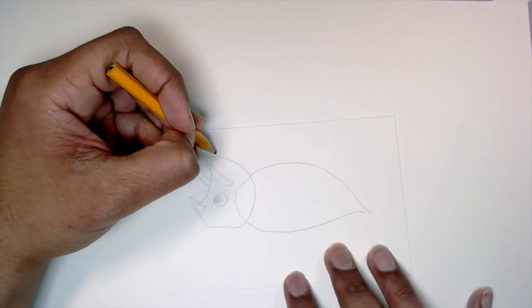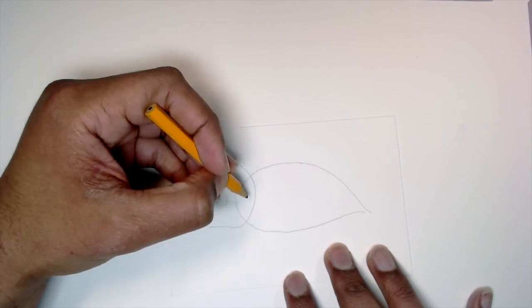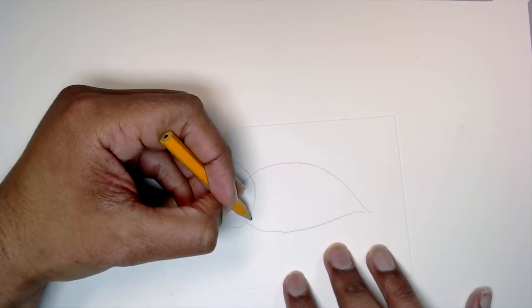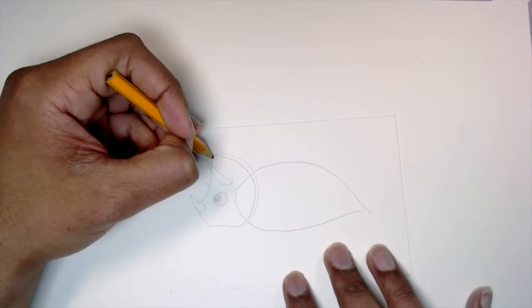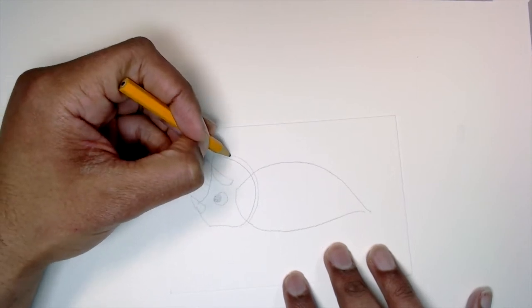And then I'll also draw some spikes around the throat. So I'll do a line like that first. And then I'll draw six.